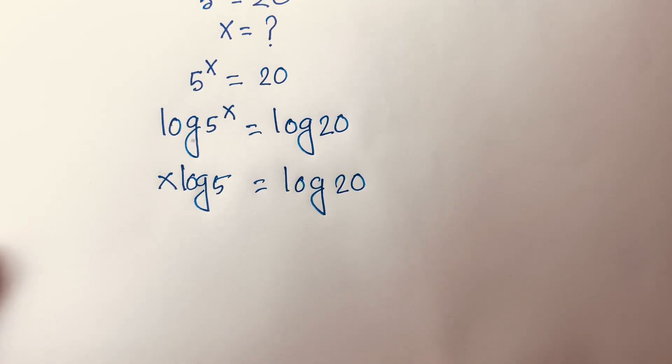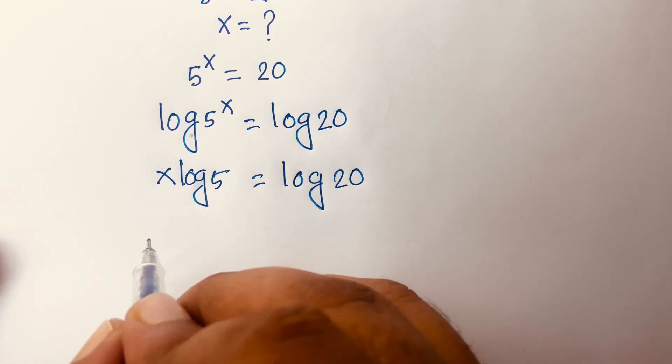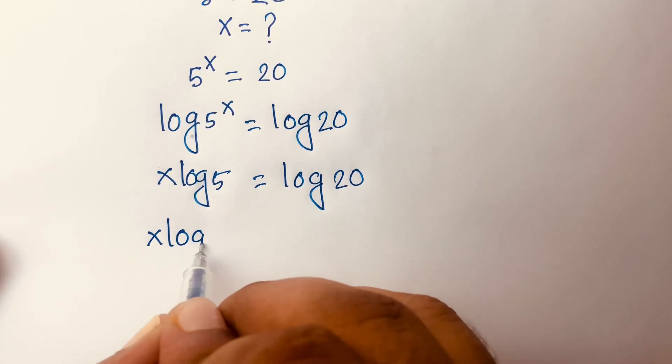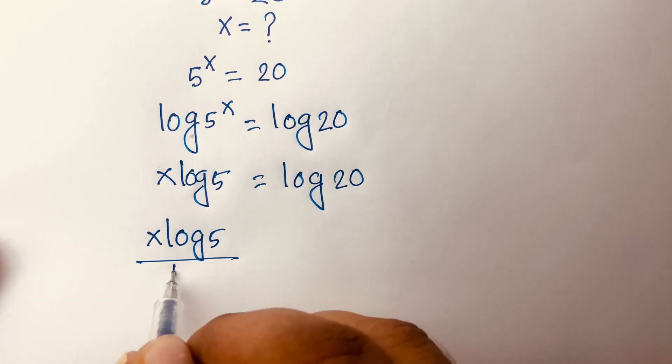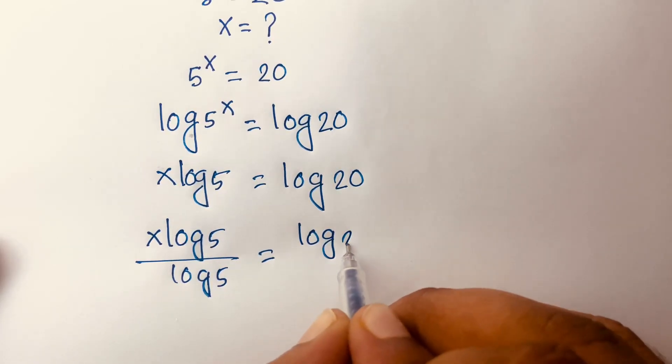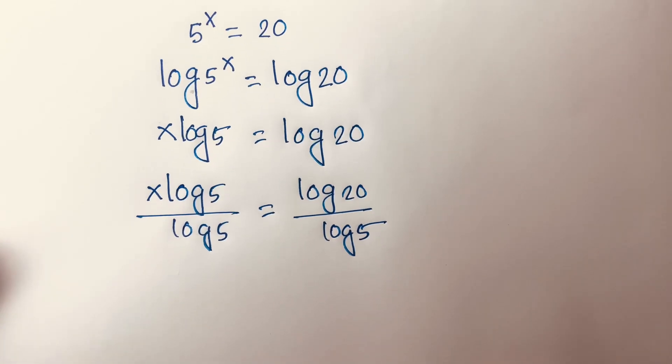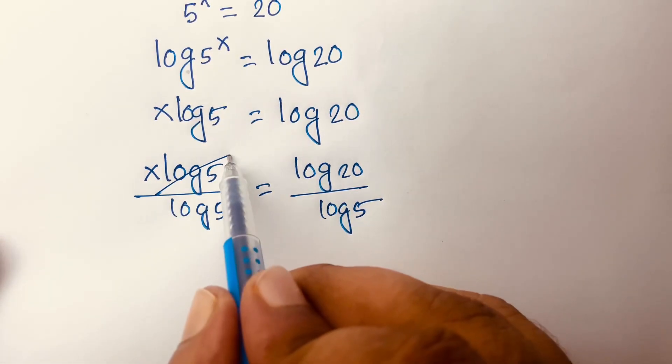Then if I divide both sides by log5, this time I can see it will be (x·log5)/log5 = log20/log5. Then I can see easily this log5, this log5 is cancelled.